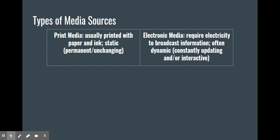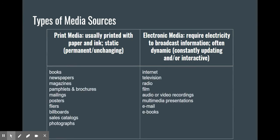Print media is considered to be static, which means permanent or unchanging, because once a book, for example, has been printed on paper and ink, it is what it is — it's not changing. Some examples of print media are things like books, newspapers, magazines, pamphlets, brochures, mailings, posters, flyers, billboards, sales catalogs, and photographs. Think about how many of these things you see on a daily basis.